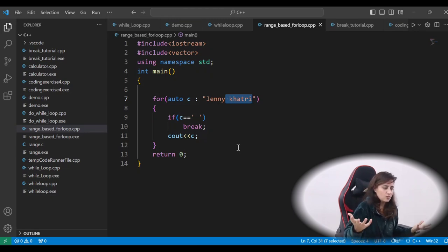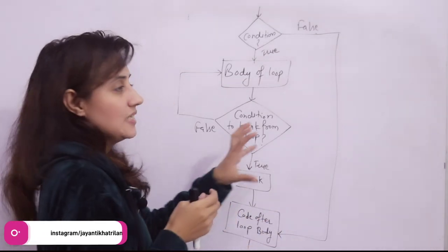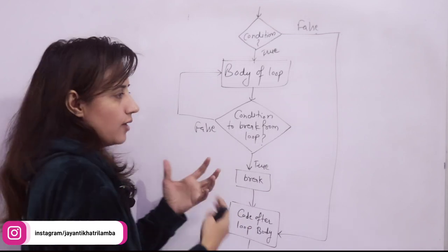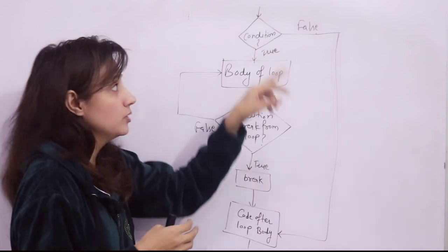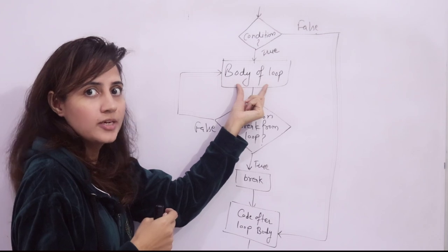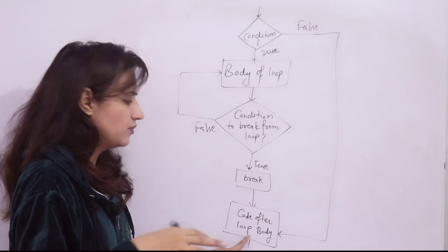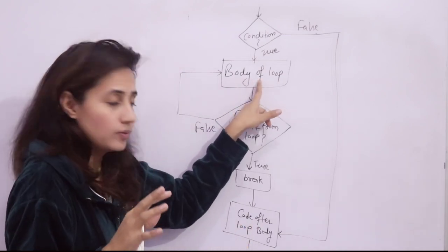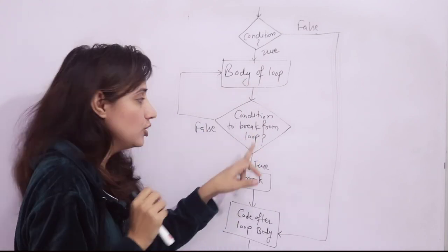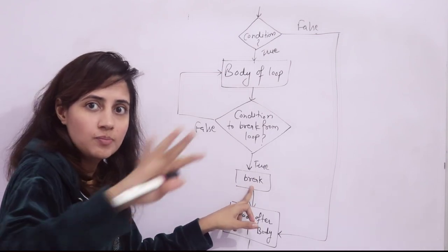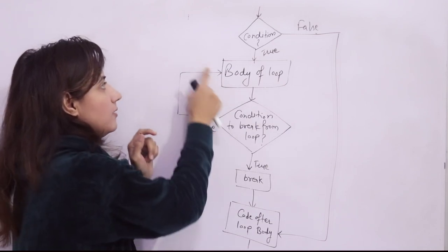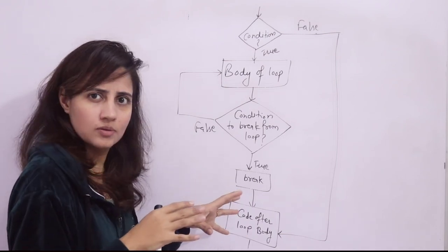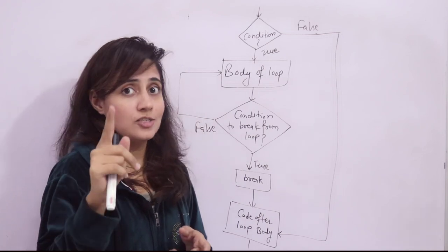If you want to draw the flowchart, here's how it works: first there is the loop condition — if true, enter the loop body. Inside, check if the break condition is true. If true, the break statement executes and jumps out of the loop, executing the code after the loop body. If the break condition is false, continue executing the loop body normally and repeat. I hope you got this. In the next video, we will see the continue statement. See you then — bye-bye, take care.